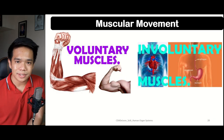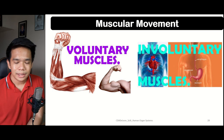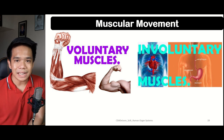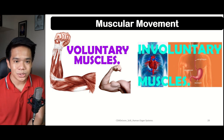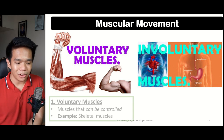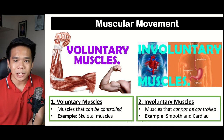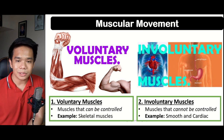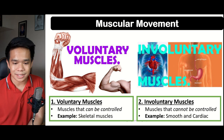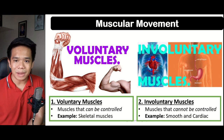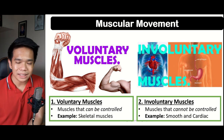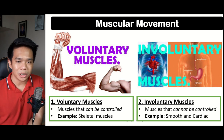Now let us go to the muscular system, starting with the different types of muscle movements. Muscles can be classified according to their movement — either voluntary or involuntary. Voluntary muscles can be controlled, and this includes the skeletal muscles. Involuntary muscles cannot be controlled, and this includes the smooth and the cardiac muscles.